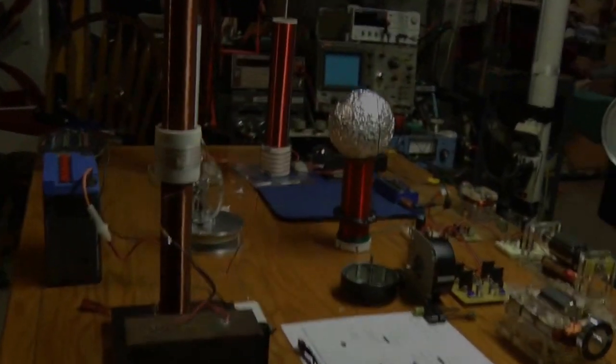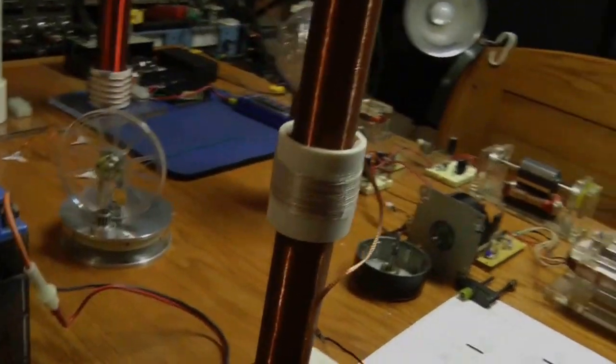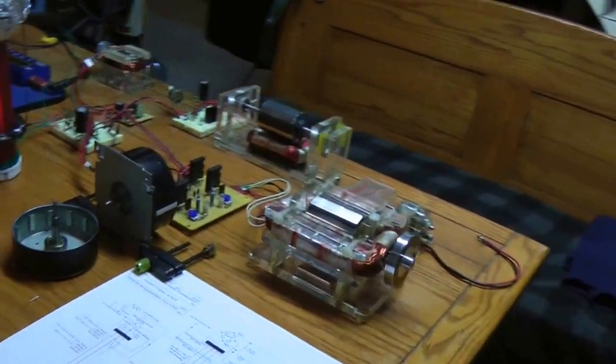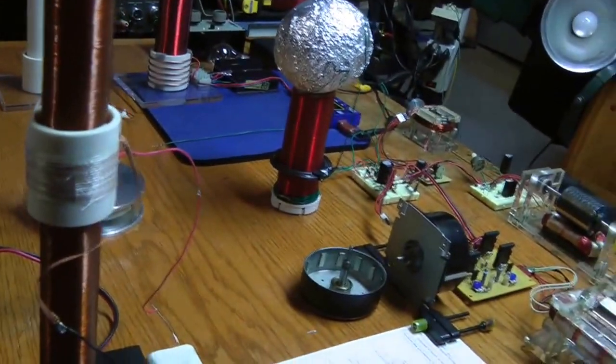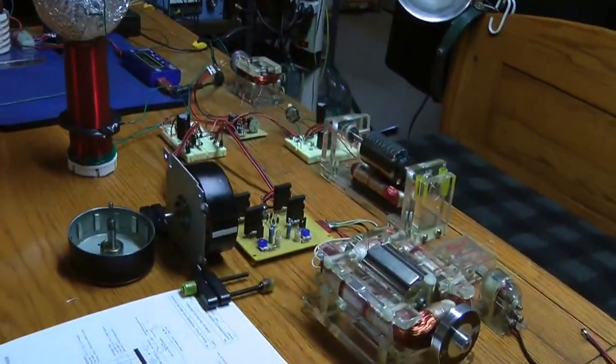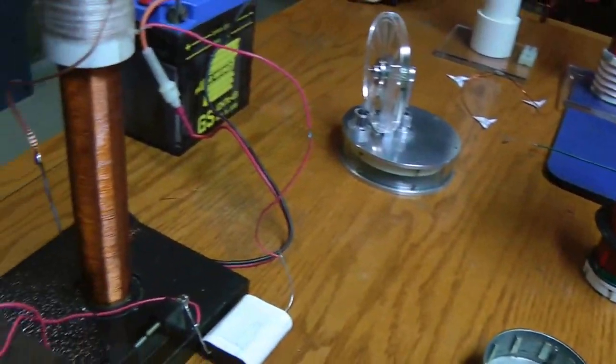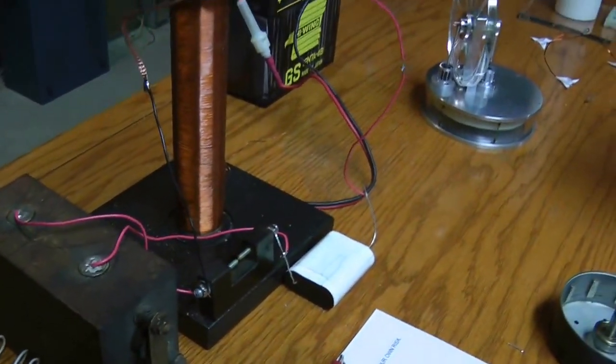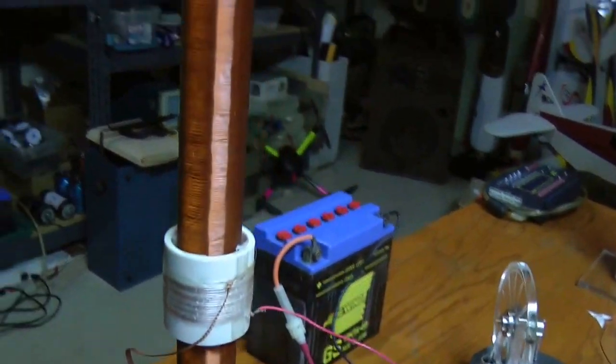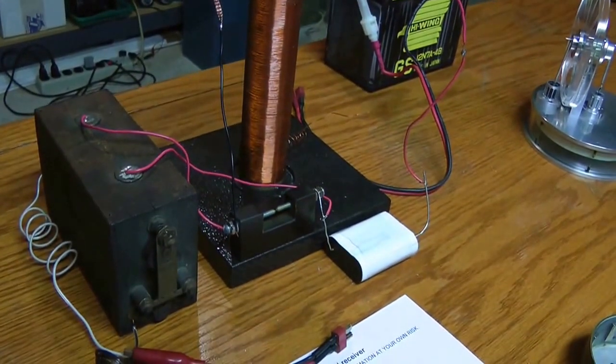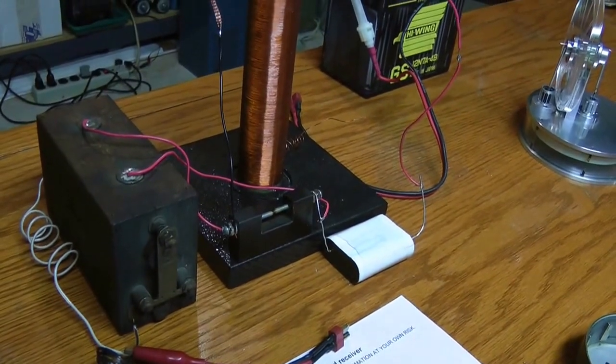Well, I'm here now and I have a whole table full of stuff that we can talk about. Let me tell you what I'm going to do in the next video or maybe two. We're going to take a look at the first Tesla coil that I made and see how it runs from a Model A ignition coil.